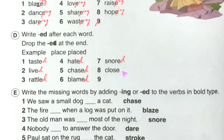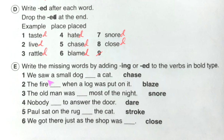Exercise E: write the missing words by adding ing or ed to the verbs in bold. We will try to put ing or ed based on the meaning of the sentence. If an action was going on at that time, we add ing. If no ongoing action is indicated, we add ed with the bold word.